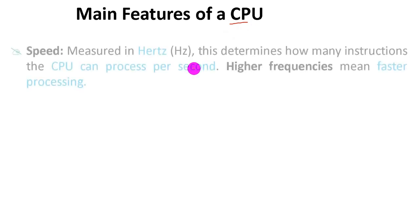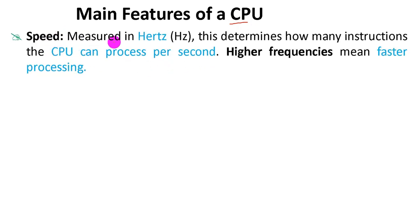The first one is speed. The speed of the CPU is measured in Hertz, the unit of frequency. As you know, frequency equals 1 over T. Frequency is inversely proportional to time. If time increases, frequency decreases. If time decreases, frequency increases. This determines how many instructions the CPU can process per second. Higher frequency means the CPU speed is high, or faster processing, to execute instructions or to calculate any mathematical operation.